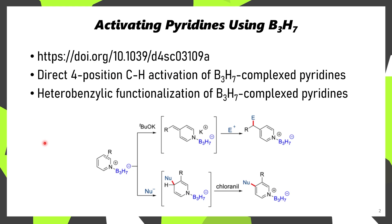The first topic for today is that triborine derivative. It turns out that if a pyridine is present, it can complex to B3H7, which, if it has a substituent in the 4-position possessing an alpha proton, can undergo deprotonation by potassium tert-butoxide, which affords the corresponding exocyclic alkene. This is then capable of reacting with electrophiles such as alkylating agents.